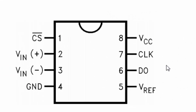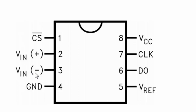Looking at the pin diagram, this is an 8-pin DIP package. The first pin is CS, the chip select pin, which is active low — providing a zero on this pin enables the ADC, while a high disables it. Pins 2 and 3 are V-in positive and V-in negative, allowing you to adjust the lower reference of the input signal. In today's lecture we are going to tie pin 3 to ground along with pin 4.